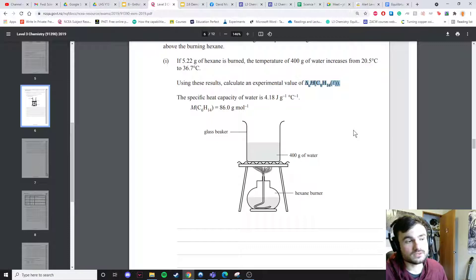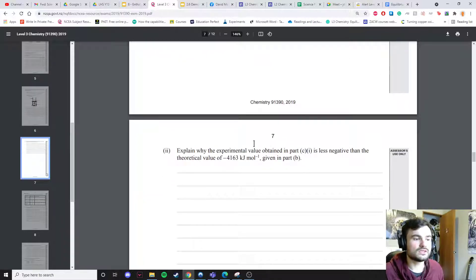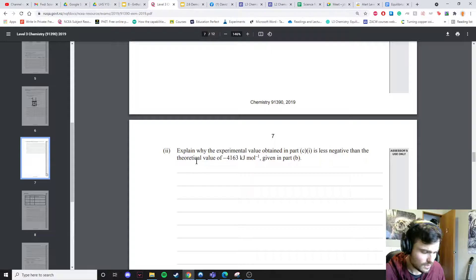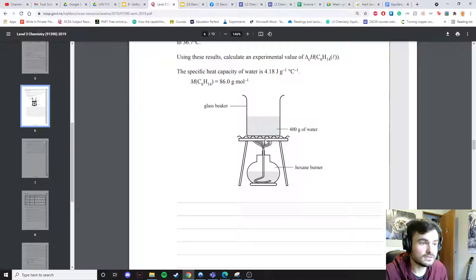There's a second part to this question which I didn't go into: explain why this value you obtained was less than the theoretical value. This is called the accuracy of this technique. There's a couple reasons why it's not so accurate, but the main one is heat. This is not a perfect system. Heat is going to escape.